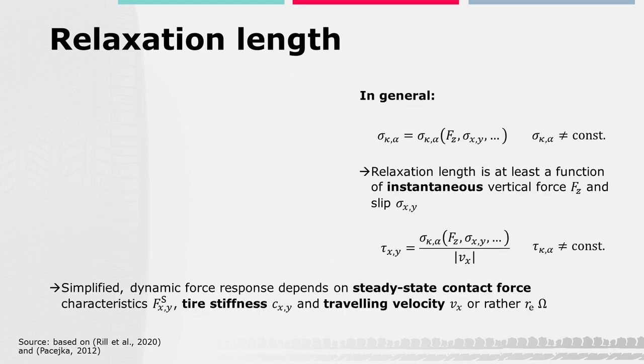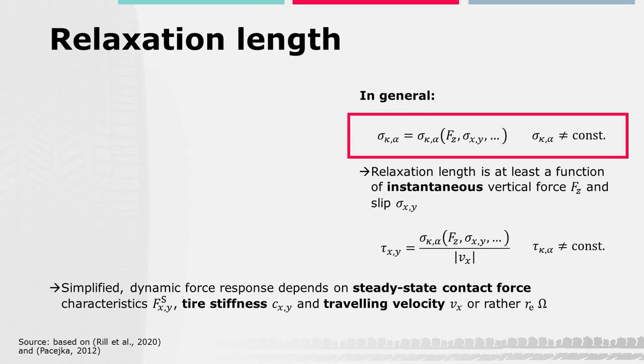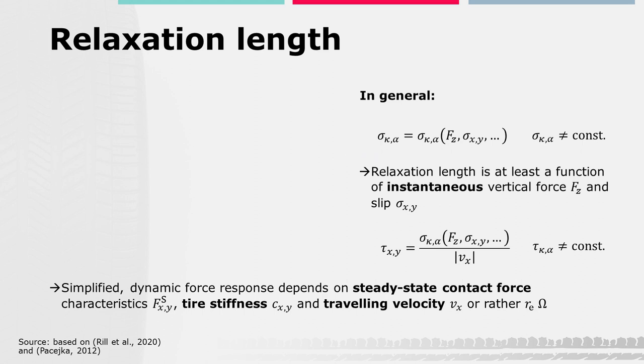More generally, a relaxation length can be determined for the longitudinal and lateral tire force transmission, often named σκ and σα respectively. However, in contrast to our simple previous considerations, this parameter is not constant in real driving. Constant relaxation lengths are only a result of the assumptions made at the beginning — in particular, small slip angles, linear tire behavior, and constant properties such as cornering stiffness and mechanical stiffness.